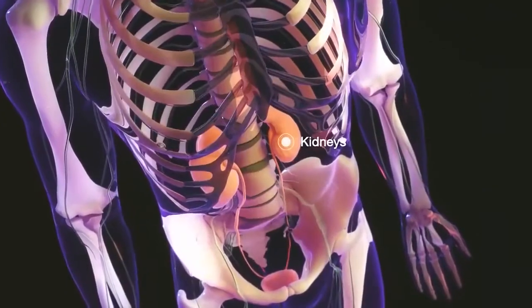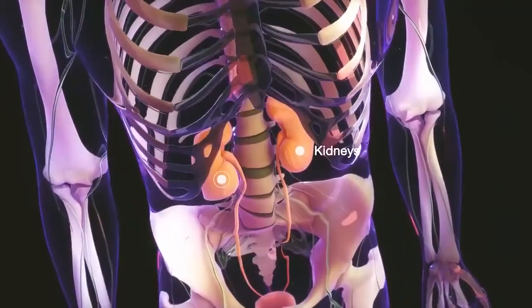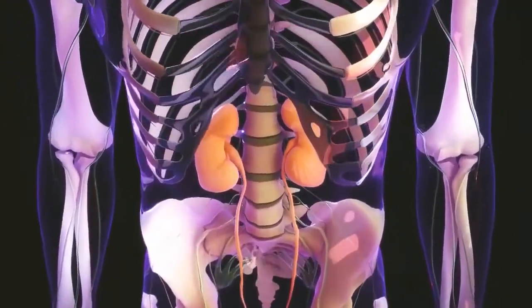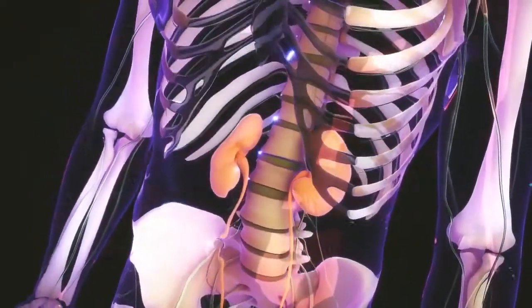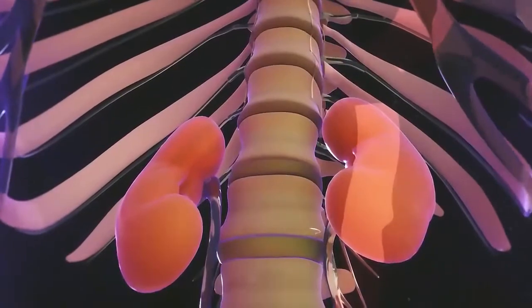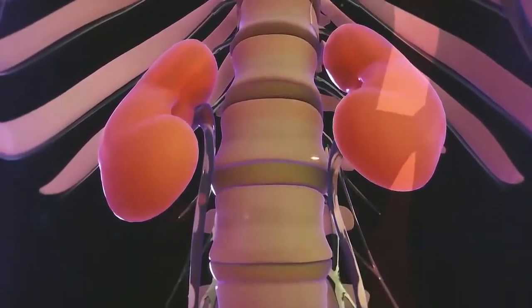The kidneys are bean-shaped organs on each side of the spinal column. The kidneys maintain the proper balance of water and minerals in the body and regulate blood pressure. In addition, the kidneys continuously filter and cleanse the blood.